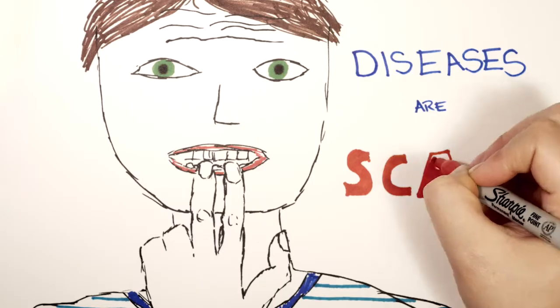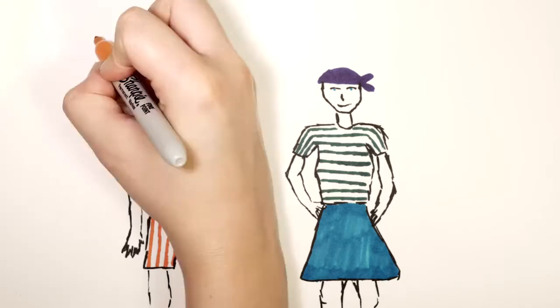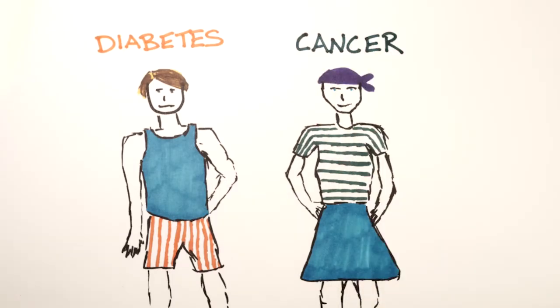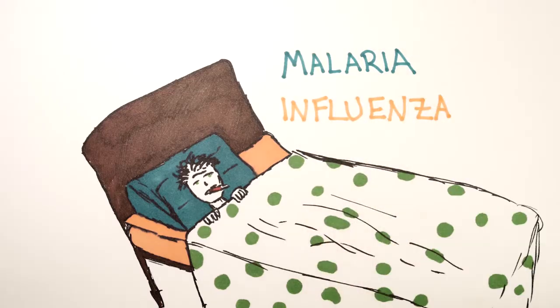Diseases are scary. They can make us sick and even kill us. Some diseases like diabetes or cancer don't spread to other people. Others like malaria or influenza are infectious.